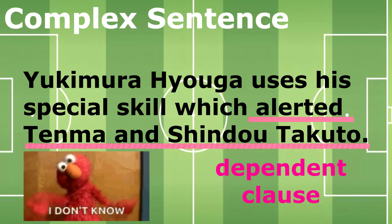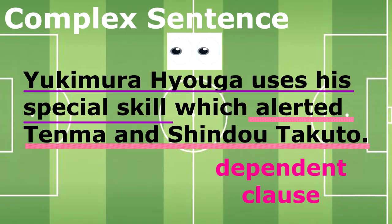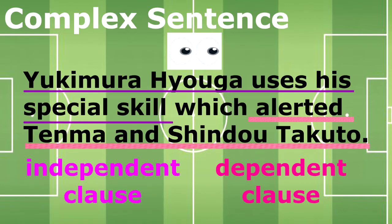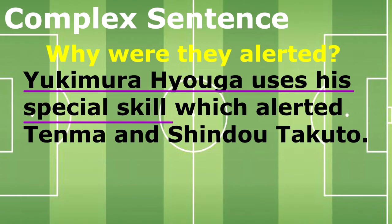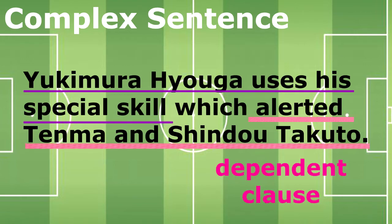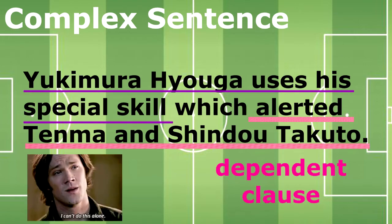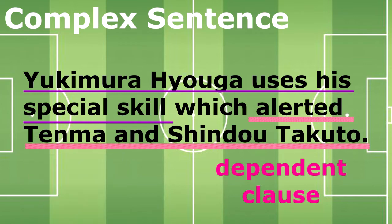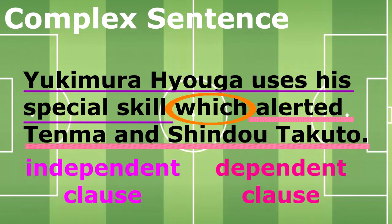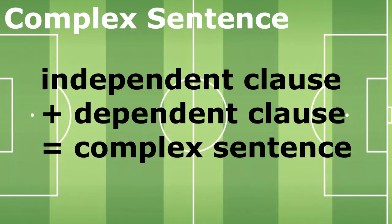We cannot know the answer to the question unless we read the independent clause in the sentence. Why were they alert? They were alert because Yukimura Yoga uses his special skill. A dependent clause cannot complete a thought on its own — that's why it needs to be joined with an independent clause. Again, independent clause plus dependent clause equals complex sentence.